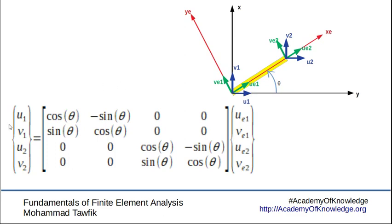First, let's write down the motions u1, v1, u2, v2 of the bar in terms of the local axis. On the left hand side we have the deformations in the global axis, the global x and y, while on the right hand side these are the deformations in the local axis. Notice that always we have vE1 and vE2 equal to 0.